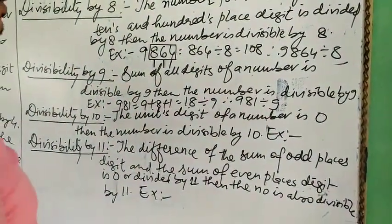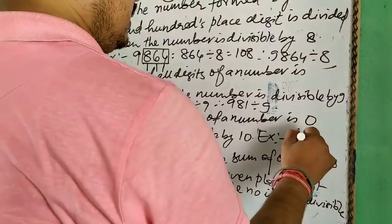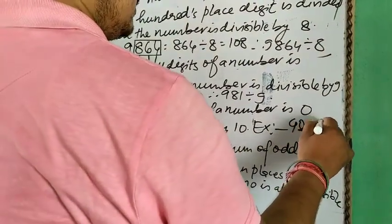Divisibility rule of 10: When unit's digit of a number is only 0, it is divisible by 10.